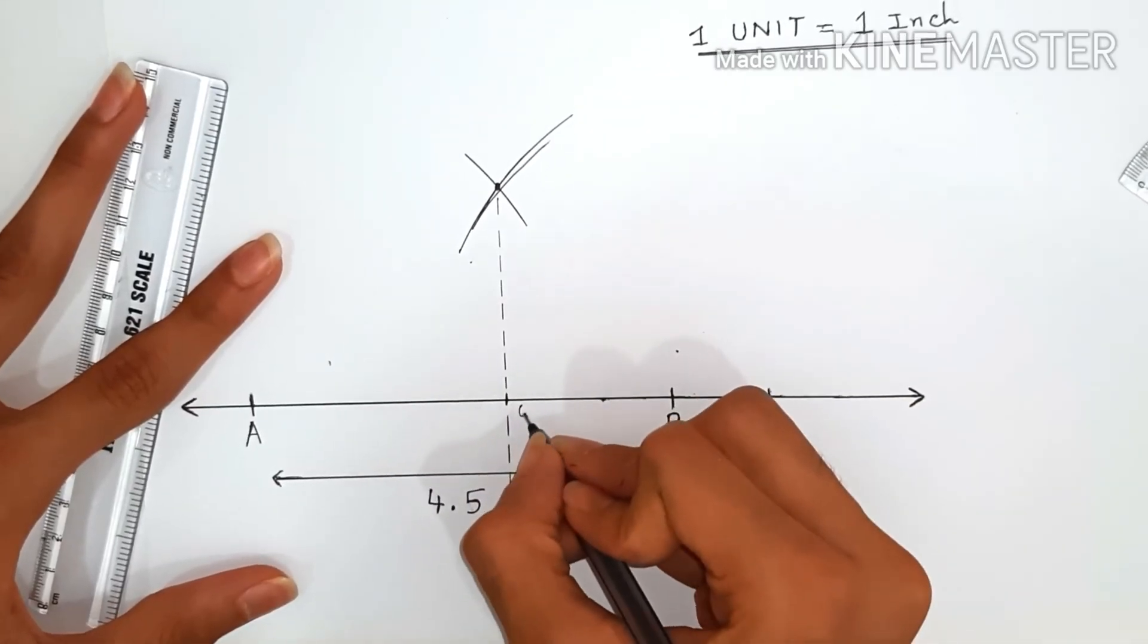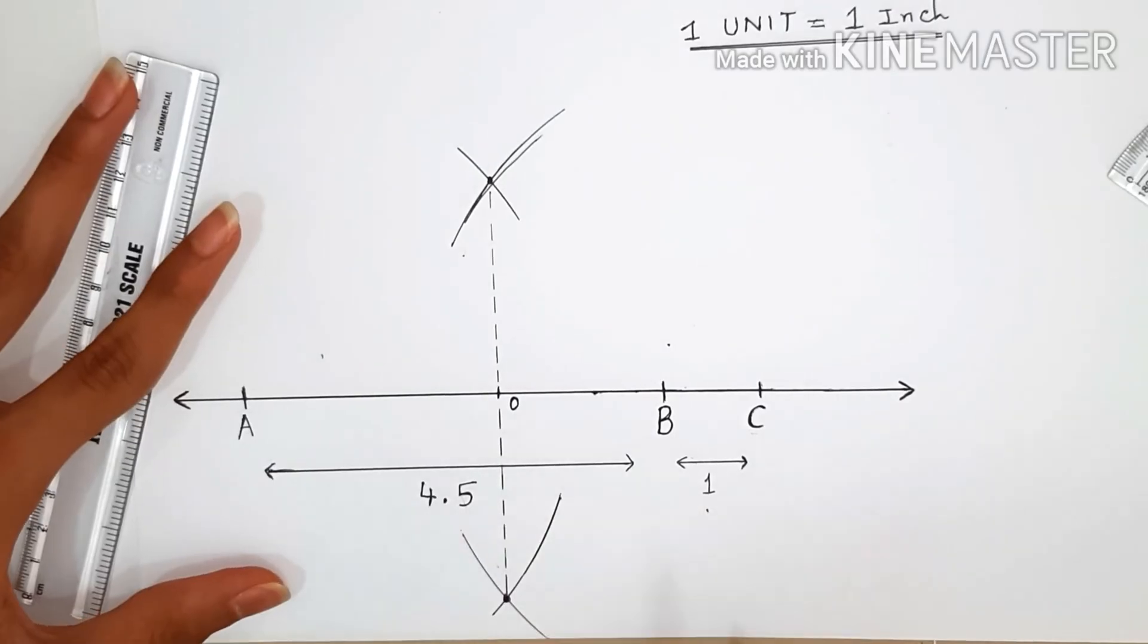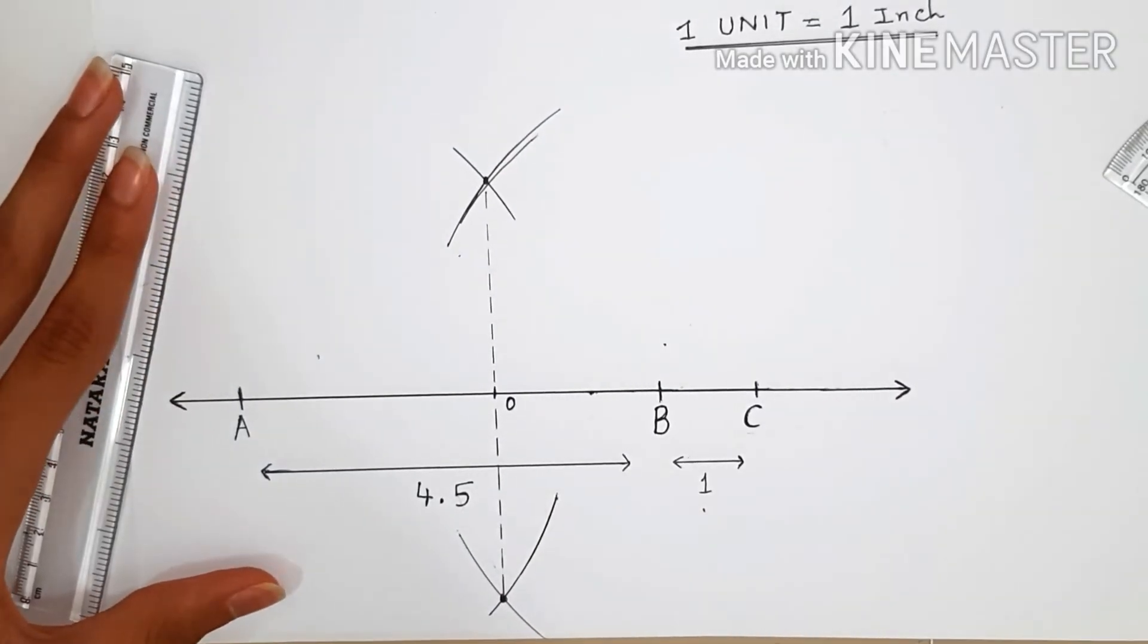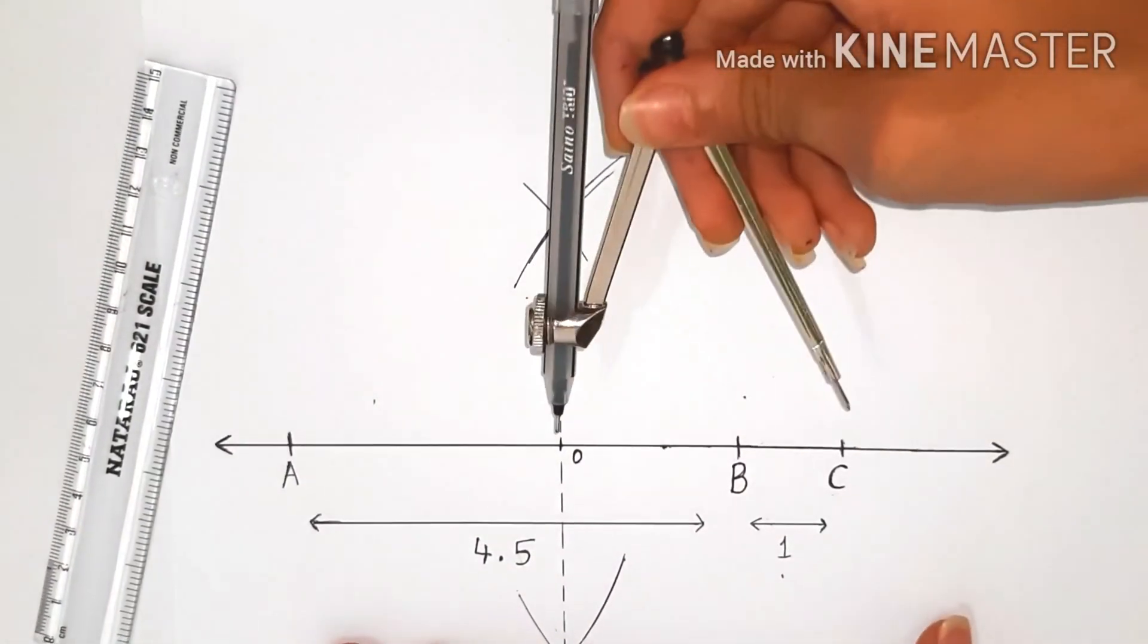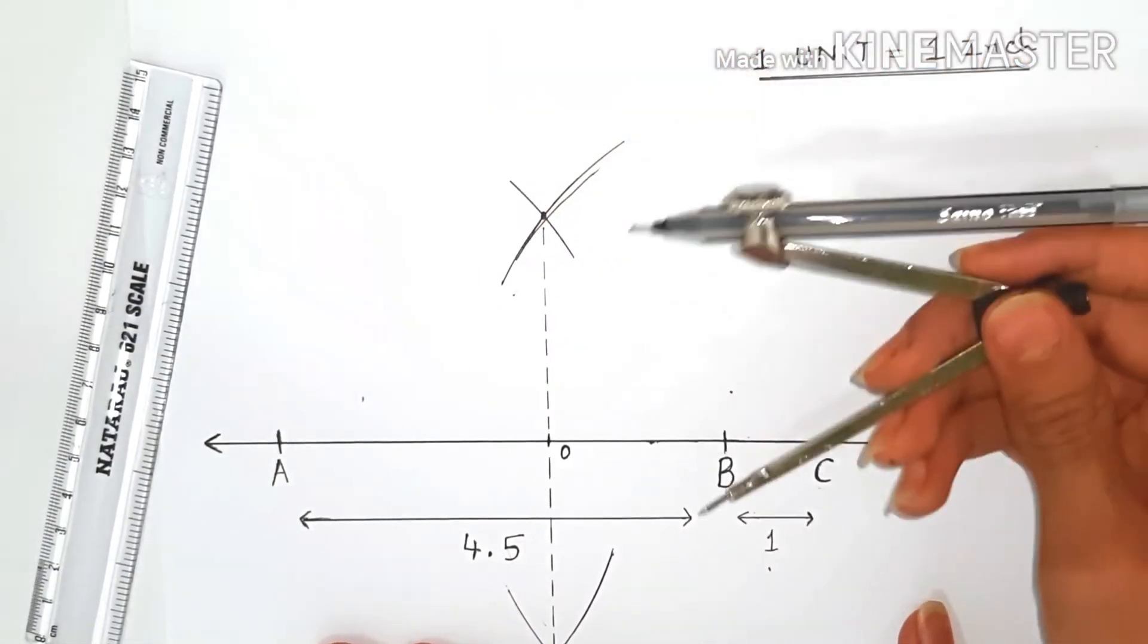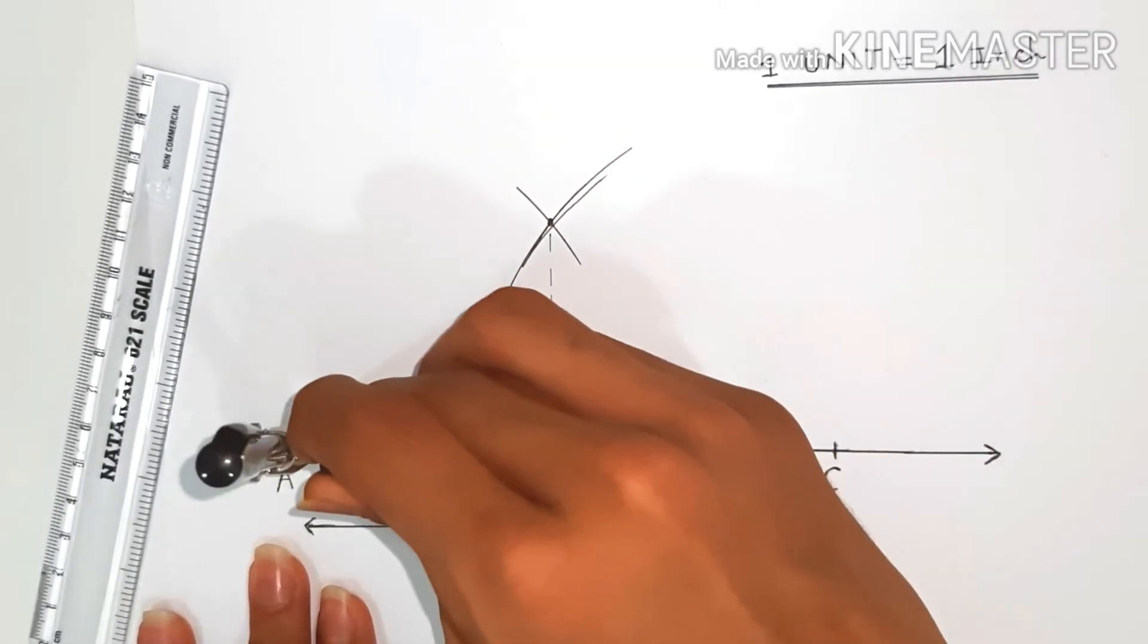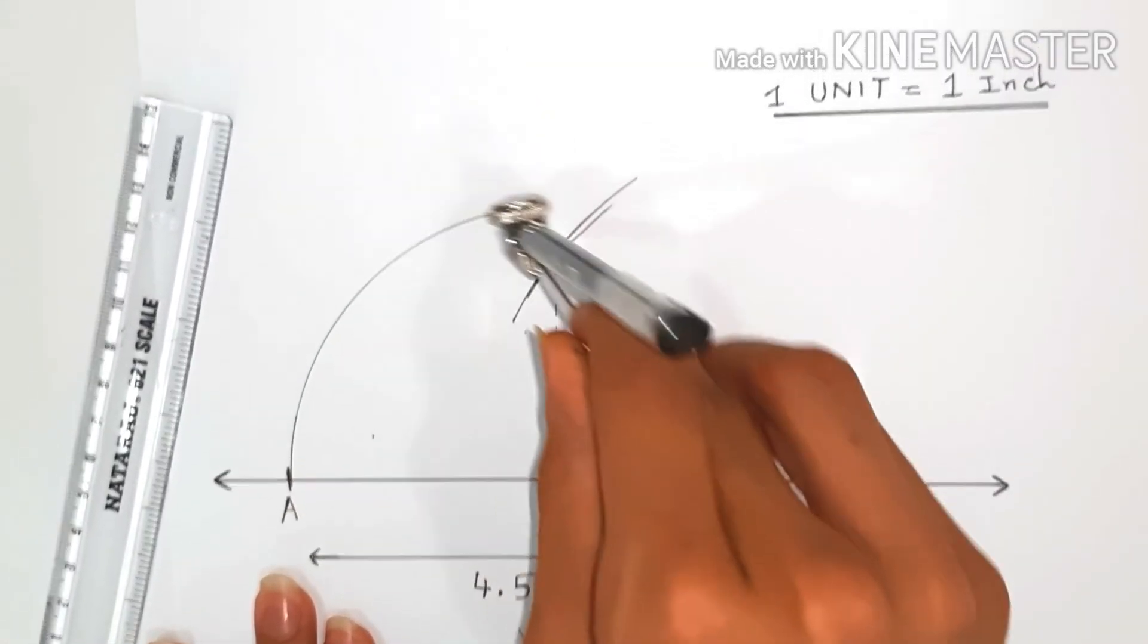Now with the help of a compass and radius equal to OC, we'll construct an arc with O as the center that cuts through the line on two points A and C.